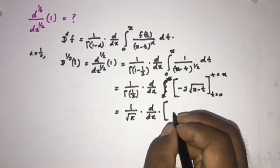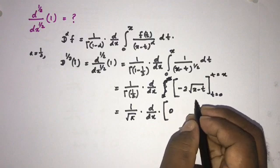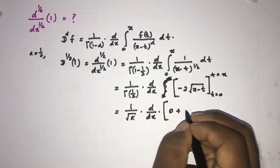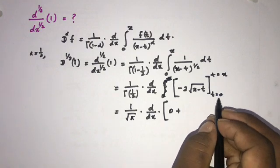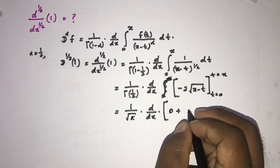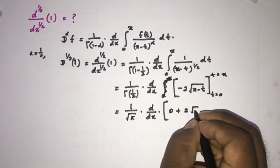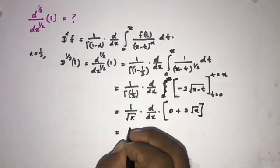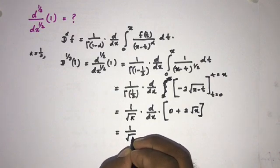we get 0, so 0 minus and here also minus, so this is going to plus. And if we plug in 0, so 2 times square root of x. Now 1 over square root of pi